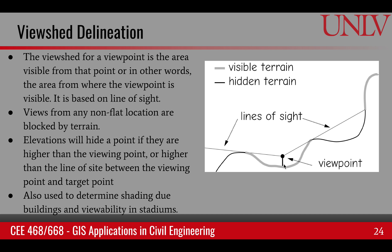In natural terrain, we often run into this problem where, because of the elevations, some of the points are hidden. In urban areas, we have the same situation — because of buildings and trees, not everything is visible from a given point. So viewshed is a very important tool to find all the points and area that are visible from a given viewpoint.